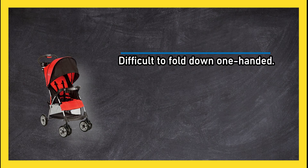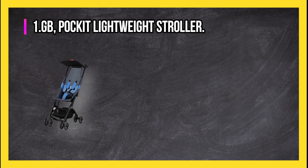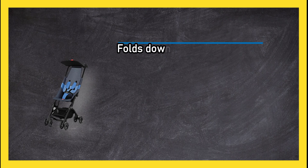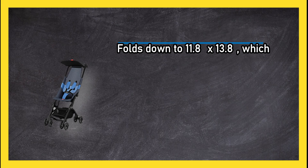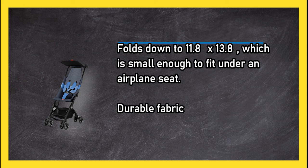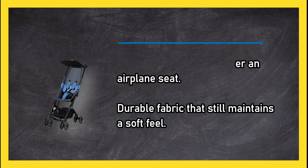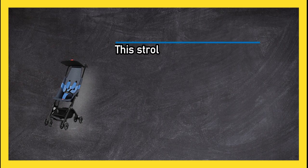At number one: GB Pocket Lightweight Stroller. Folds down to 11.8 inches by 13.8 inches, which is small enough to fit under an airplane seat. Durable fabric that still maintains a soft feel. This stroller is the ultimate in portability.